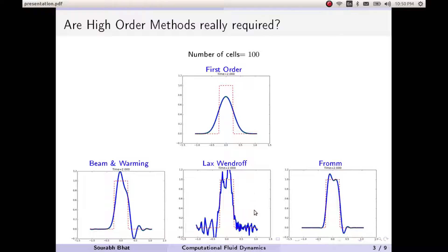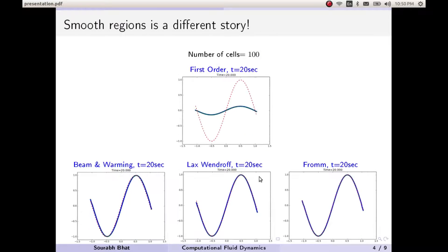We will get rid of oscillations which come up in case of second order or higher order methods. To achieve that, we will be combining these two and using the limiter.